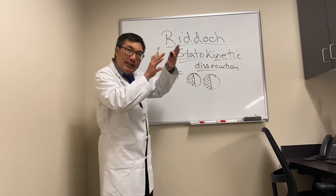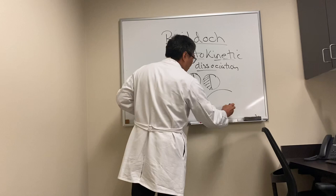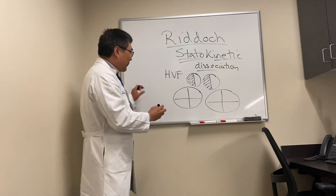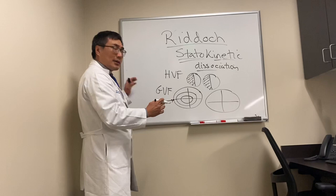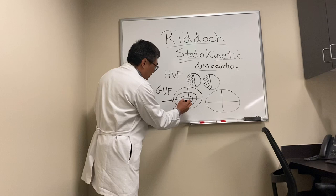As opposed to kinetic perimetry, which is hard to find nowadays, but Goldmann perimetry would be an example of that — where the stimulus is moved from the non-seeing part of the field into the seeing part, and it generates isopters linking the same stimulus size test object into an oval that represents the hill of vision.